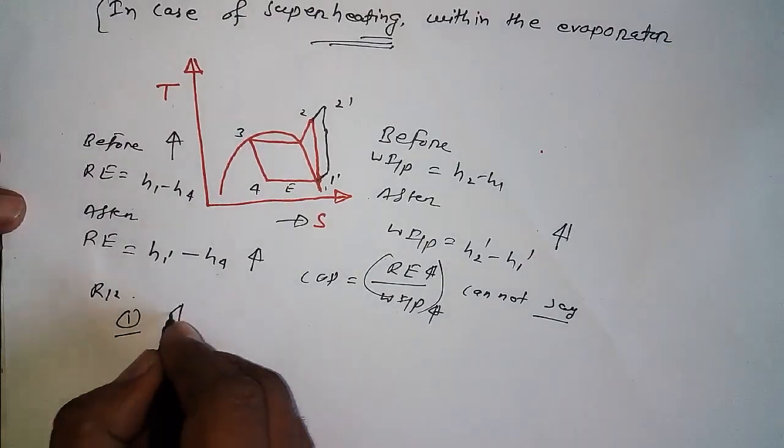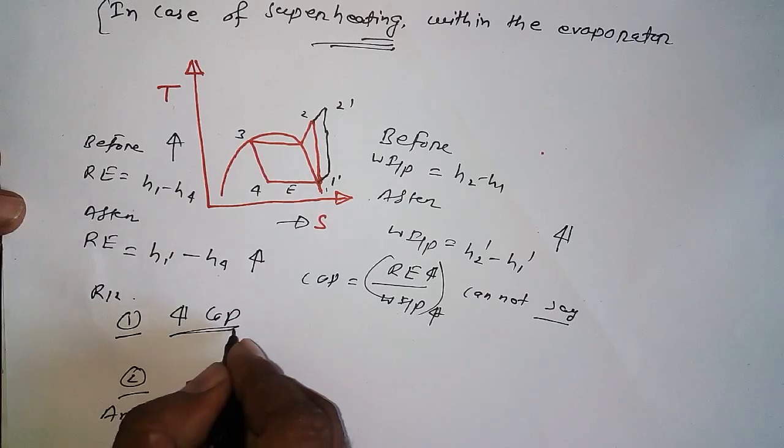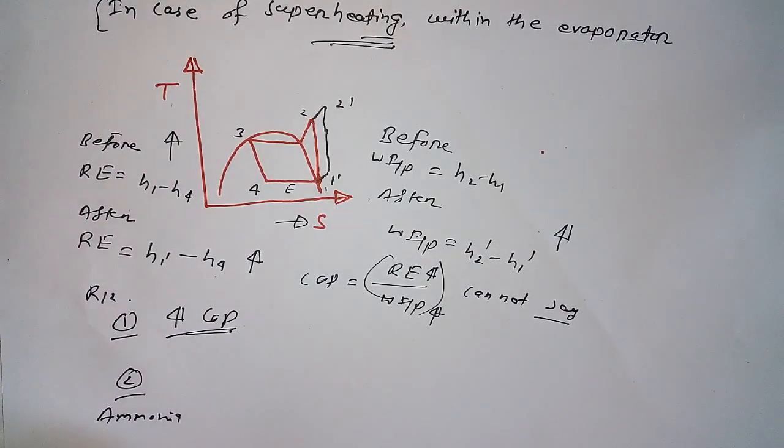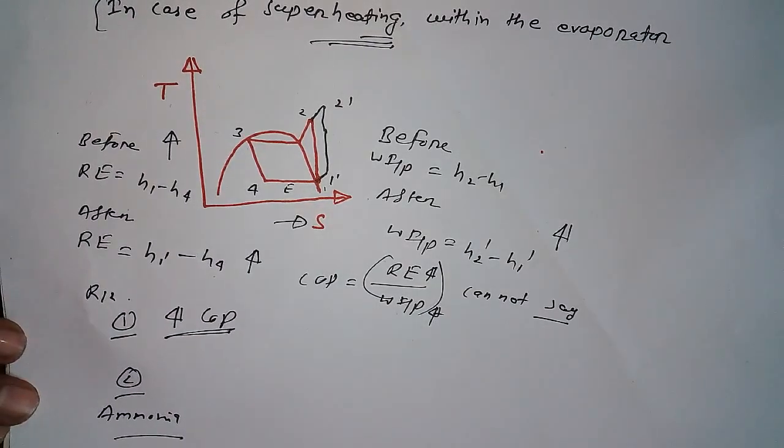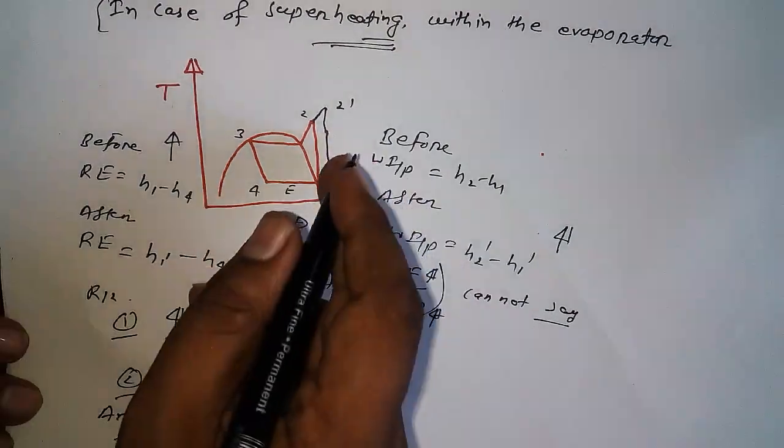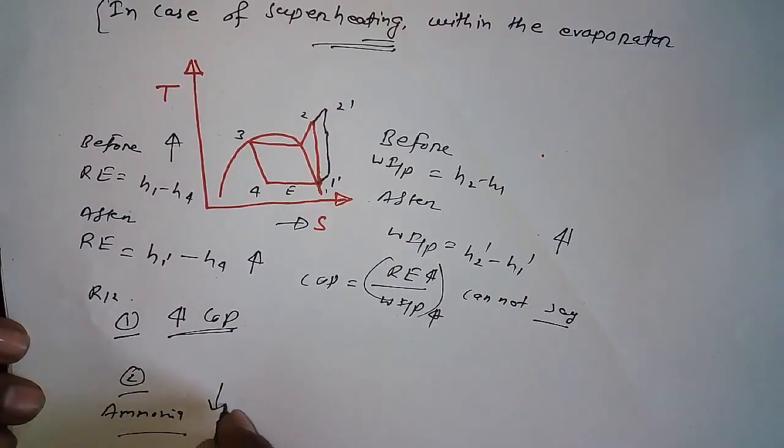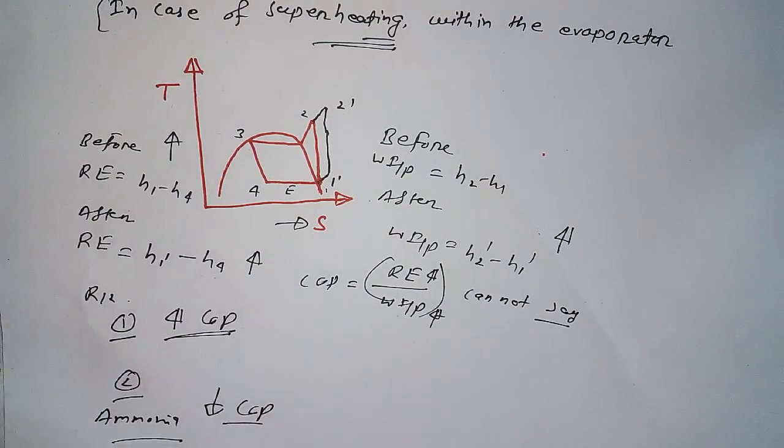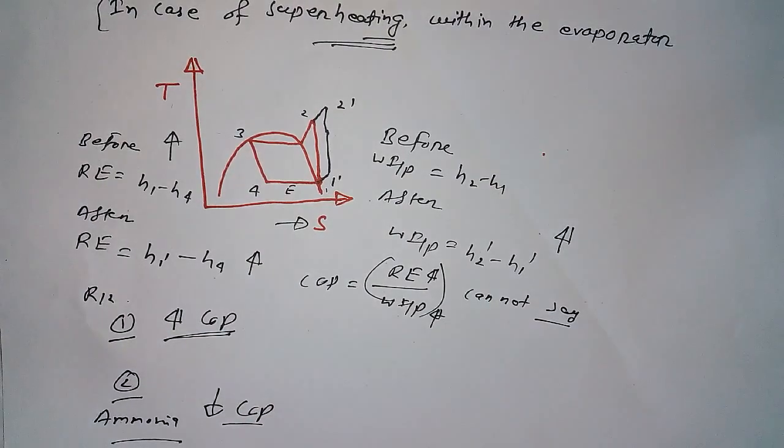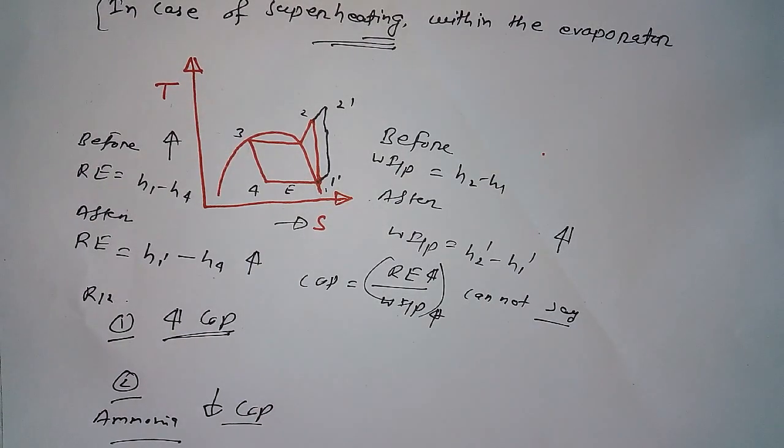COP of the cycle will increase. But if we use ammonia as a refrigerant for this type of cycle, then COP of the cycle will decrease. R12 increases COP, ammonia decreases COP. So as I told you, it depends on the value, which refrigerant we are taking. Then we can specify whether it will increase or decrease.